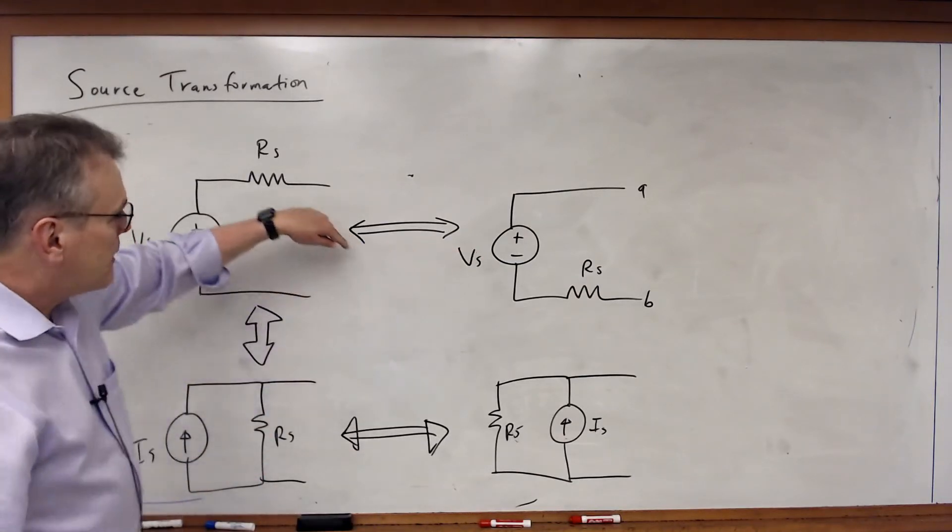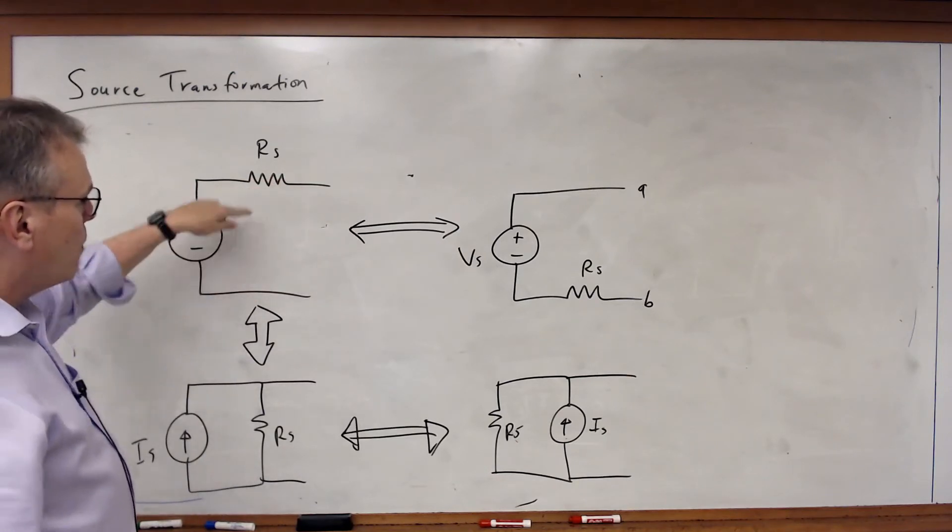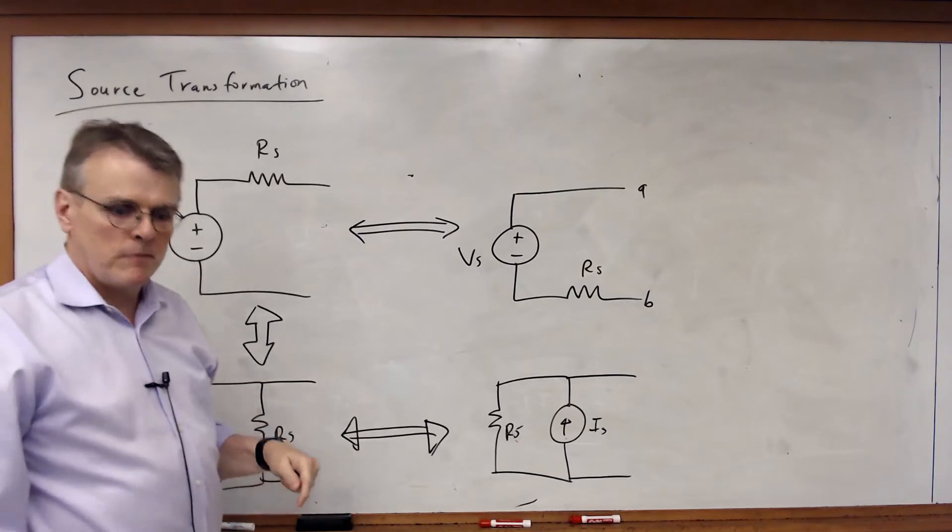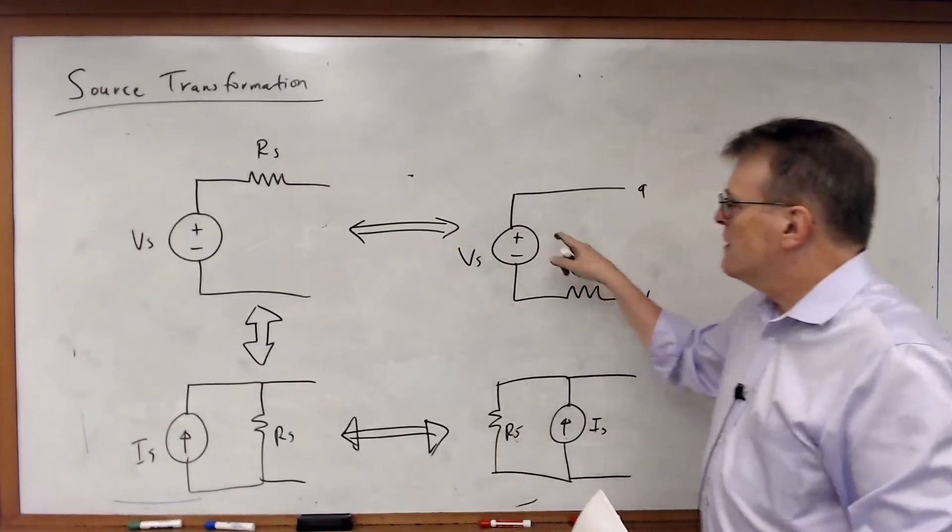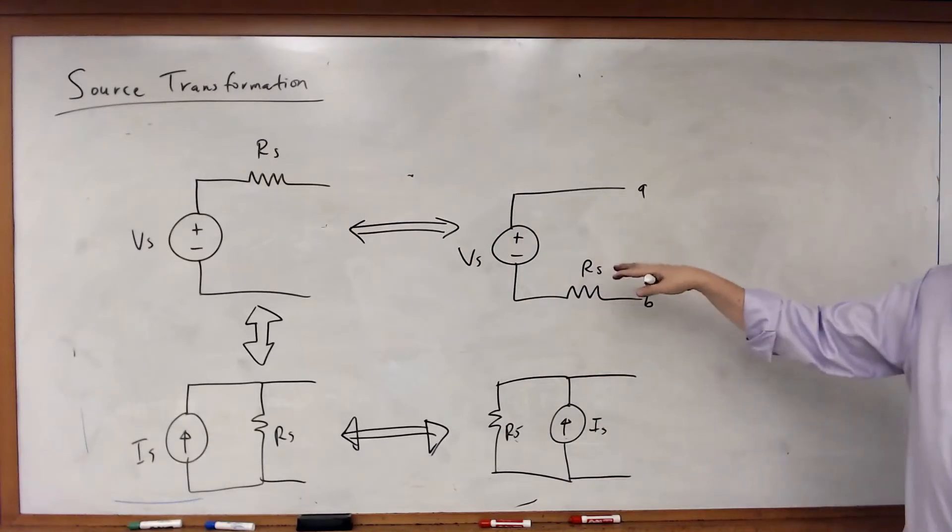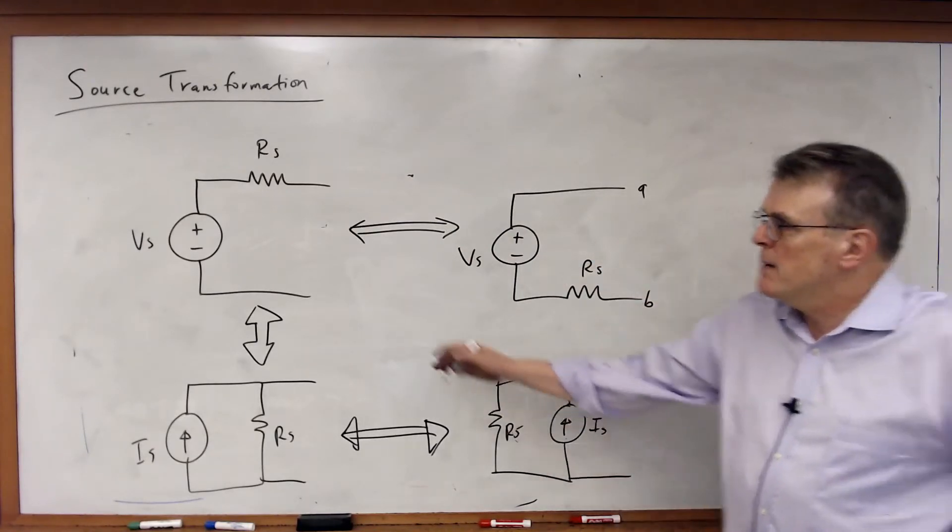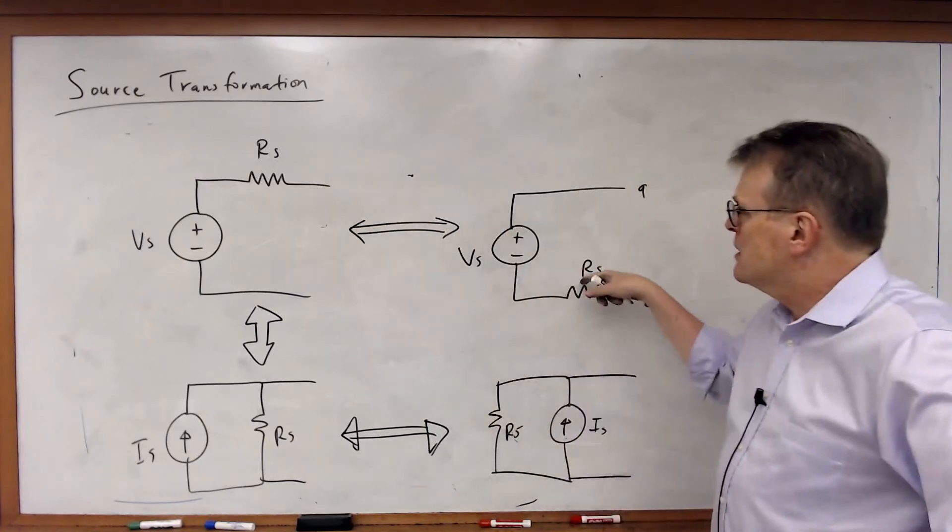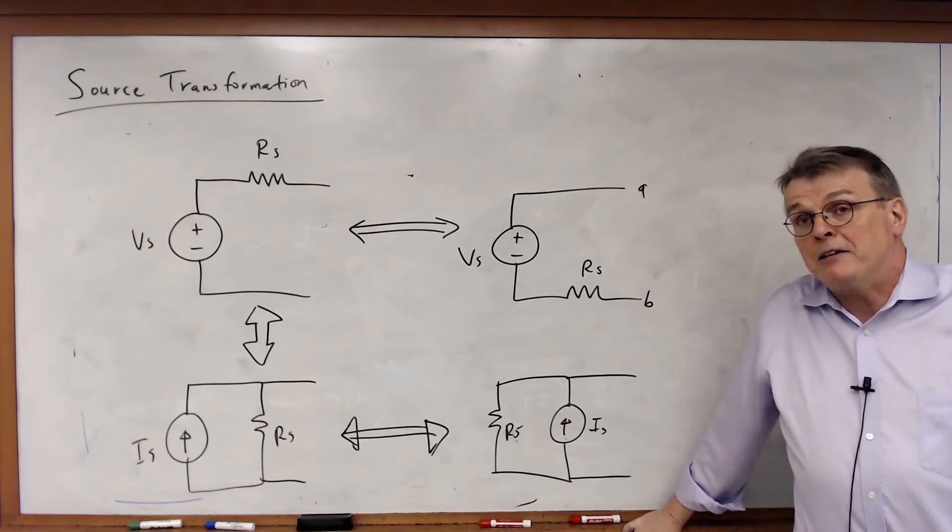Once again, think about it. If I write a KVL equation around this loop, it doesn't matter what order it is, I'm going to get the same equation. So I can actually flip this and go to this. And it turns out when you're going through and you're simplifying these types of circuits, sometimes swapping the order of the resistor and putting it on the other side of the voltage source can be a very handy trick to use.